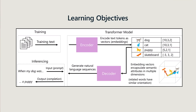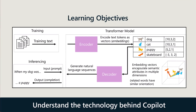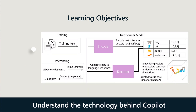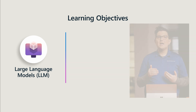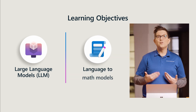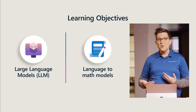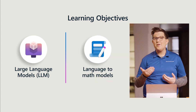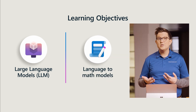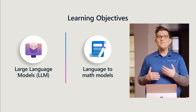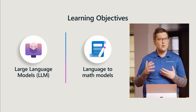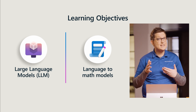First, we need to understand the underlying technology that has made Microsoft Security Co-Pilot possible: large language models, or LLMs. We cover how these transformer models can encode and decode natural human language via mathematical equations, spotting trends and surfacing patterns that aren't always easy to see.